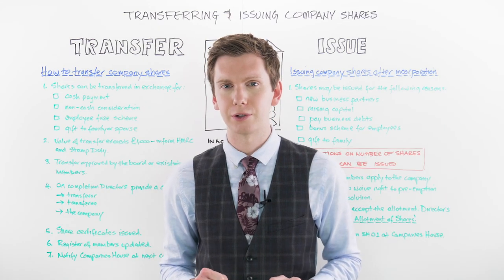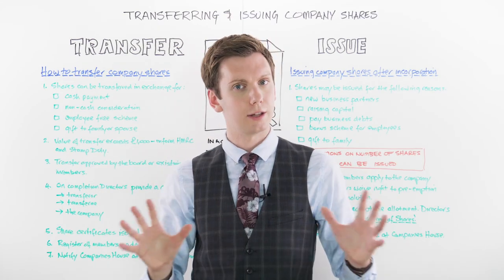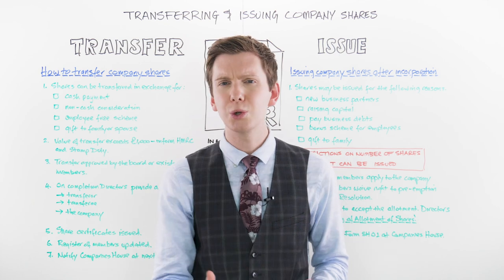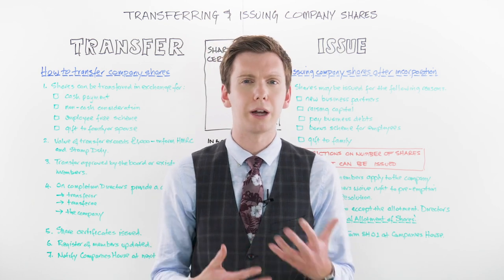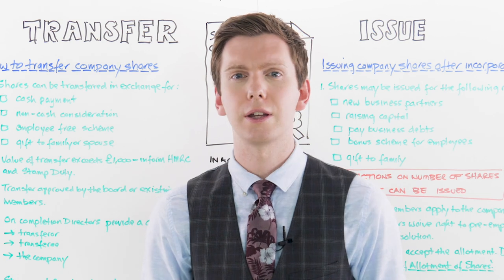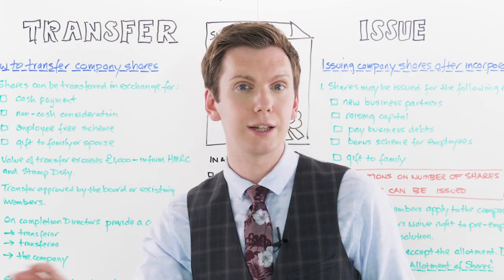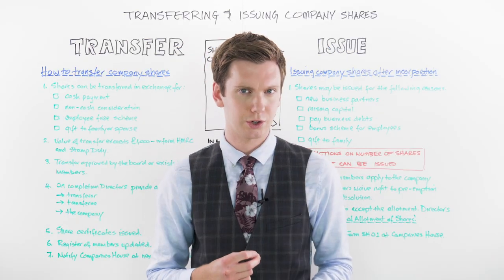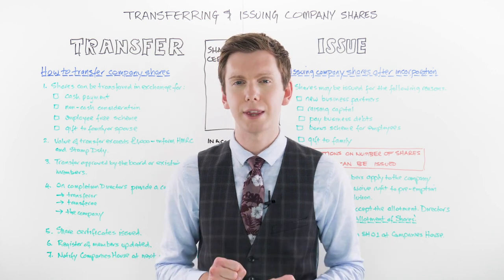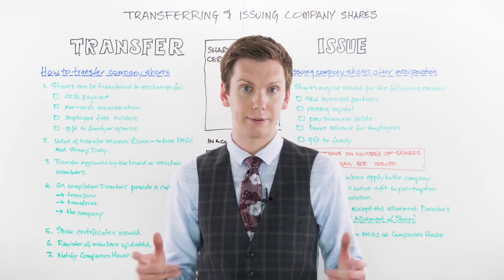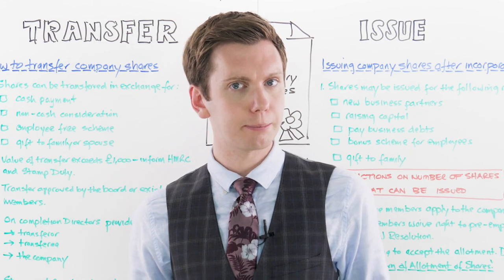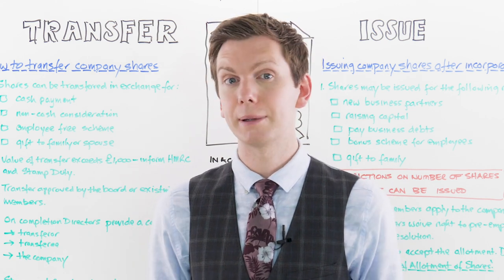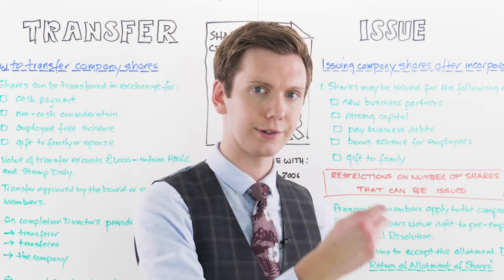Regarding the power of directors to issue company shares: the articles adopted by private limited companies formed after the 1st of October 2009 will usually permit directors of companies with a single share class to authorise the allotment of an unlimited number of ordinary shares without seeking approval of existing members. However, this power is still at the discretion of the members, as they have the right to restrict directors' powers at any time if they wish. If the directors aren't permitted to authorise an allotment, shareholders must pass a resolution to approve it, or amend the articles to grant such powers to the directors.